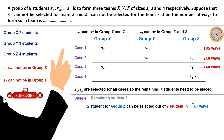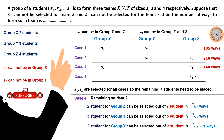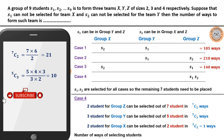After filling group Z, five students remain. Three students are selected for group Y from these five in 5C3 ways, and the remaining two fill group X in 2C2 = 1 way. So 7C2 = 21 and 5C3 = 10. The total for Case 4 is 21 × 10 × 1 = 210.